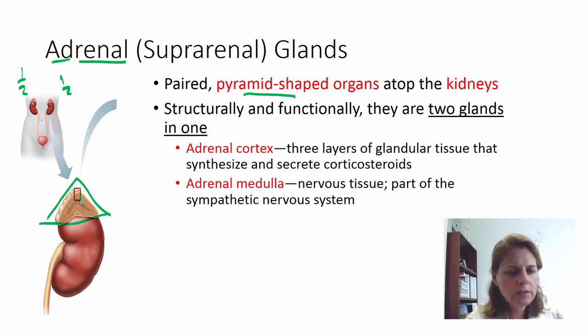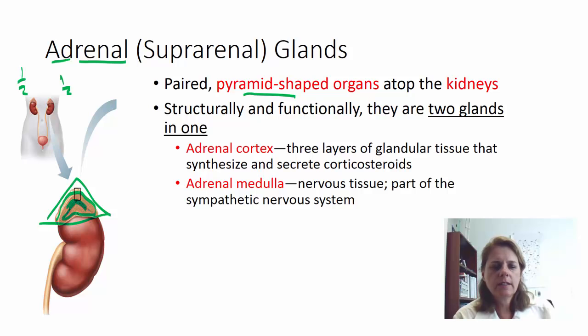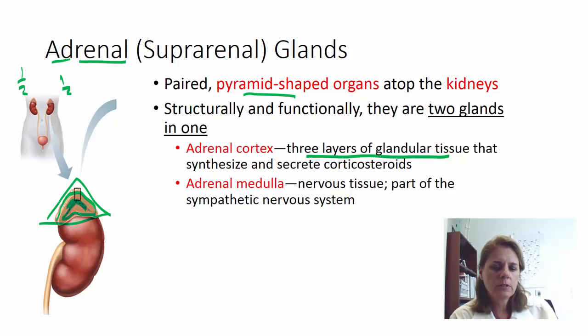This beige area is your adrenal cortex and the colored area in the middle is the adrenal medulla. The cortex actually acts as three separate endocrine organs — it has three layers of glandular tissue and each one of those layers does its own thing. The cortex has a set of hormones it produces and the medulla has a set of things it produces.